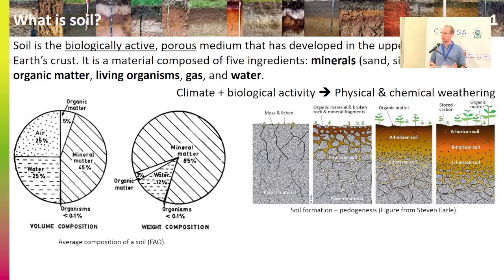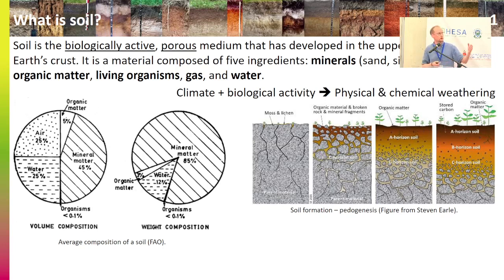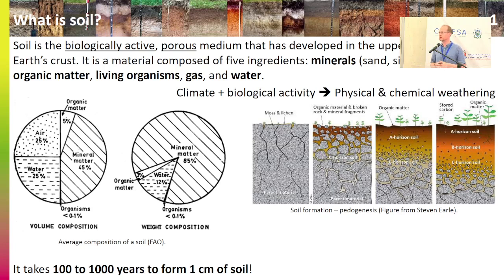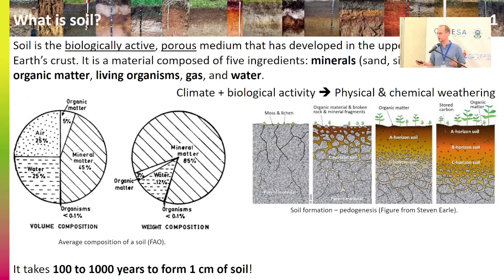So how is a soil formed? Soil formation is called pedogenesis. Everything starts from a parent material — rock — and then with interaction with climate and biological activity, you have physical and chemical weathering, and with time you have the development of different soil horizons. But it's a very, very slow process. It takes about 100 to 1,000 years just to form one centimeter of soil. So you can understand that soil is a non-renewable resource at human scale, and we are currently losing soil much faster than it is formed through erosion or bad land management practices.